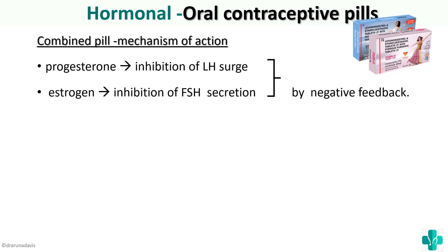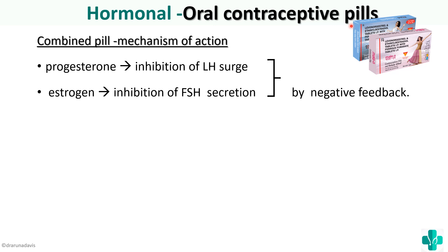From the pituitary, hormones act on the ovary. When there are higher levels of estrogen and progesterone, there will be negative feedback inhibition, resulting in decreased secretion of LH and FSH from the pituitary. So by negative feedback, there is a decrease in LH and FSH levels.